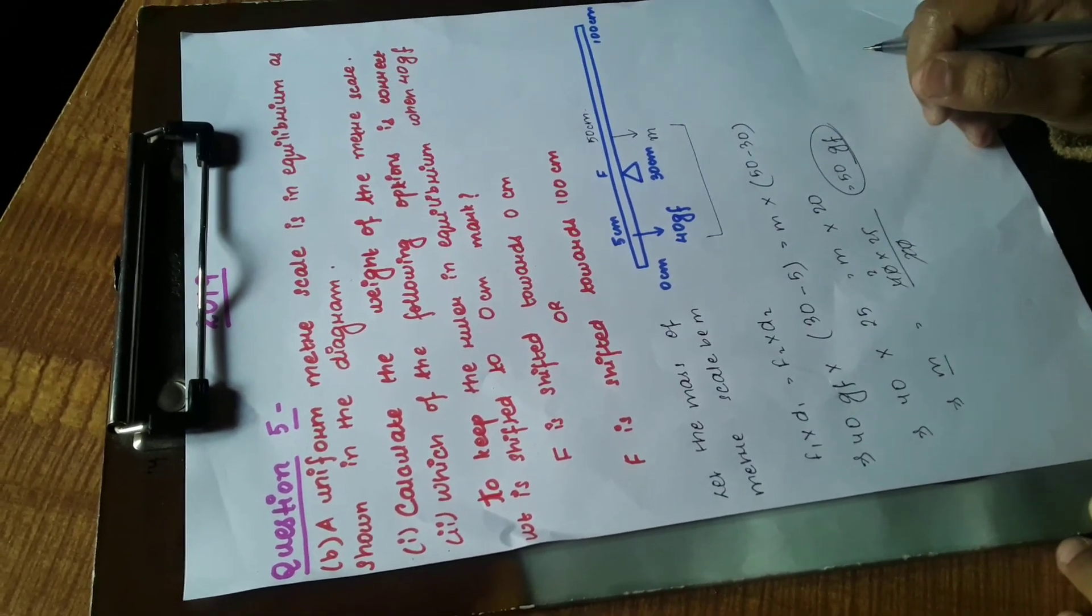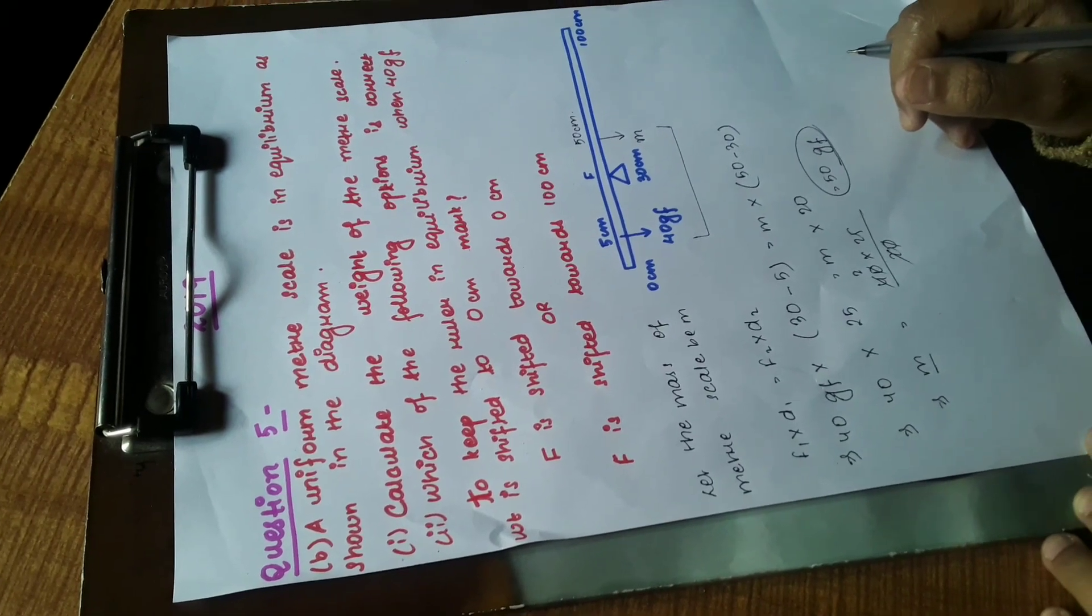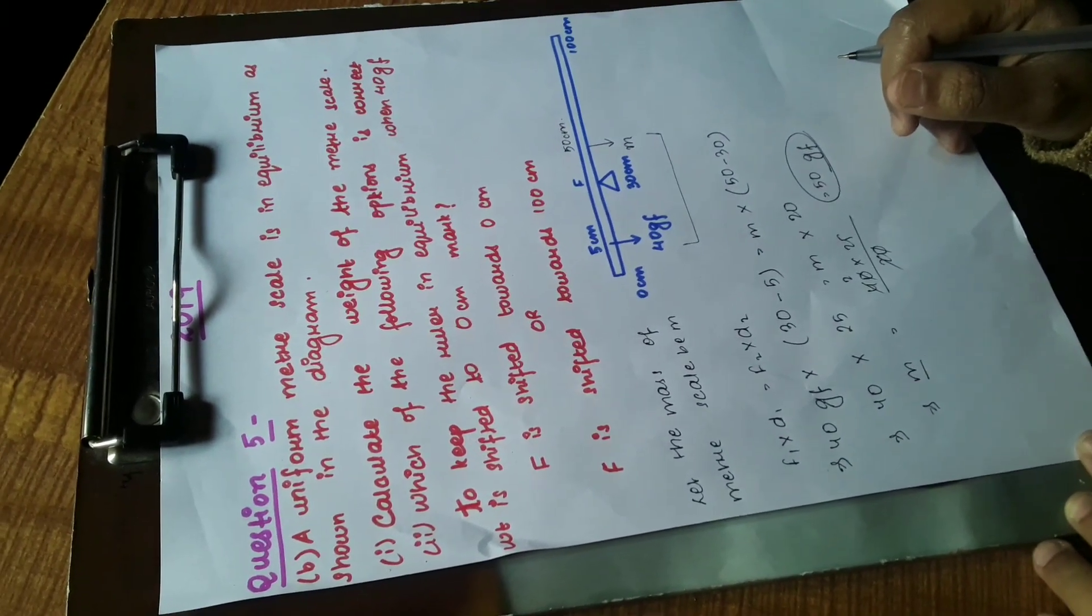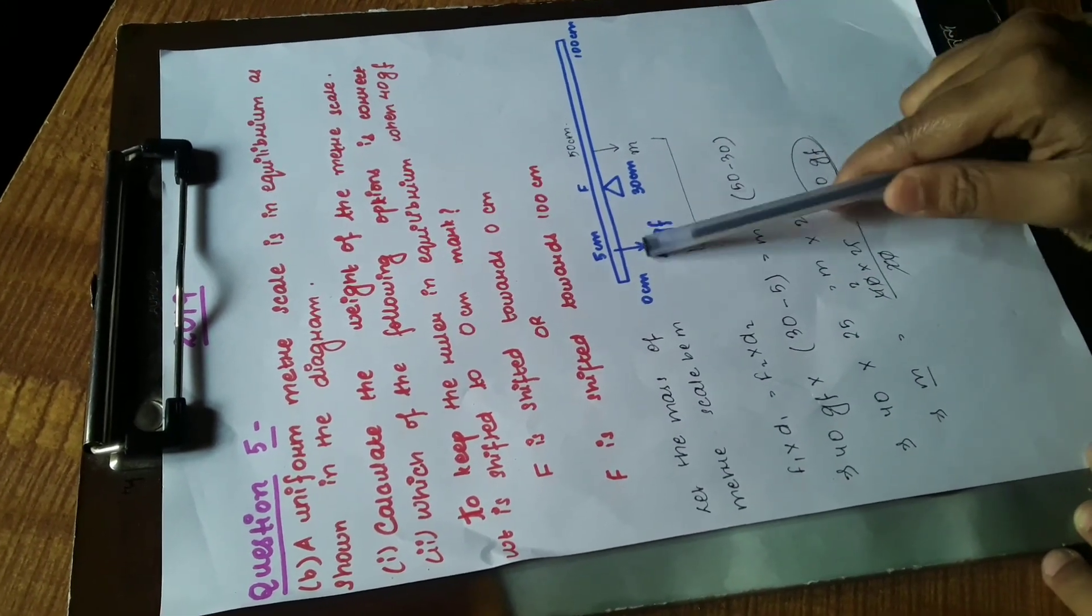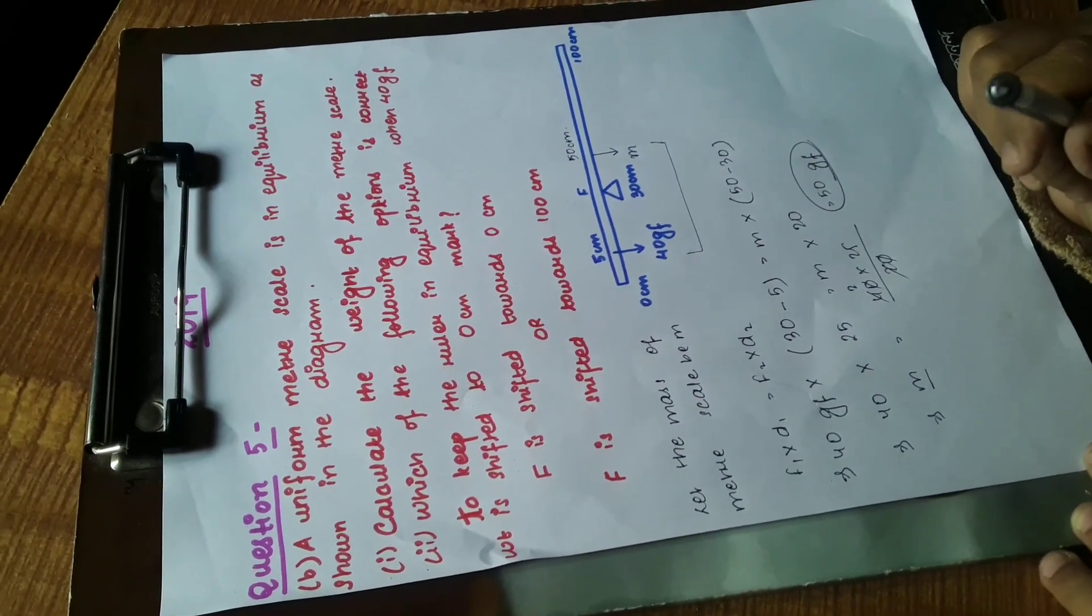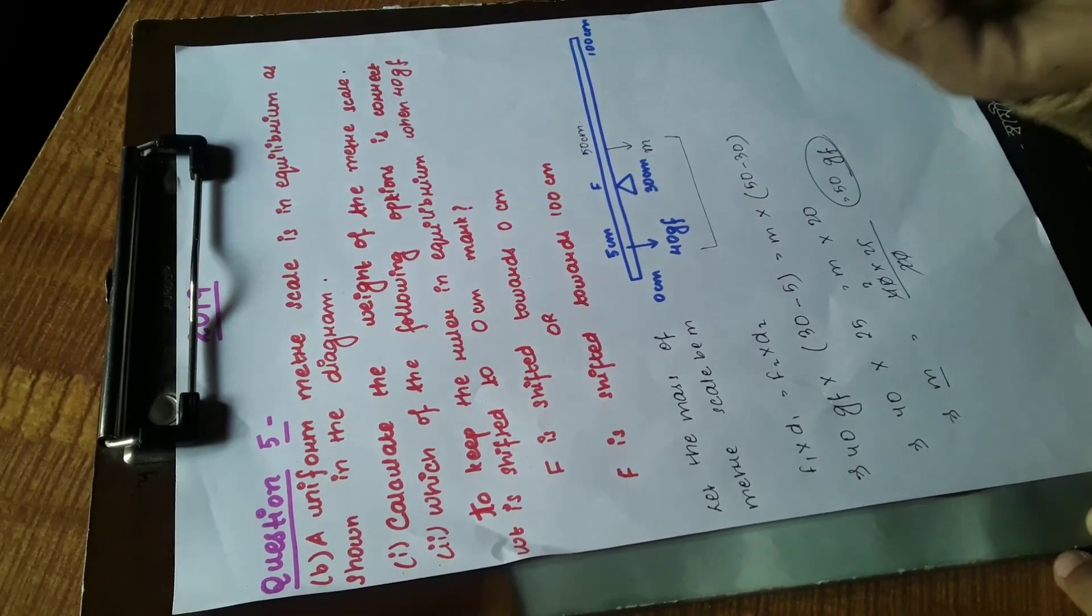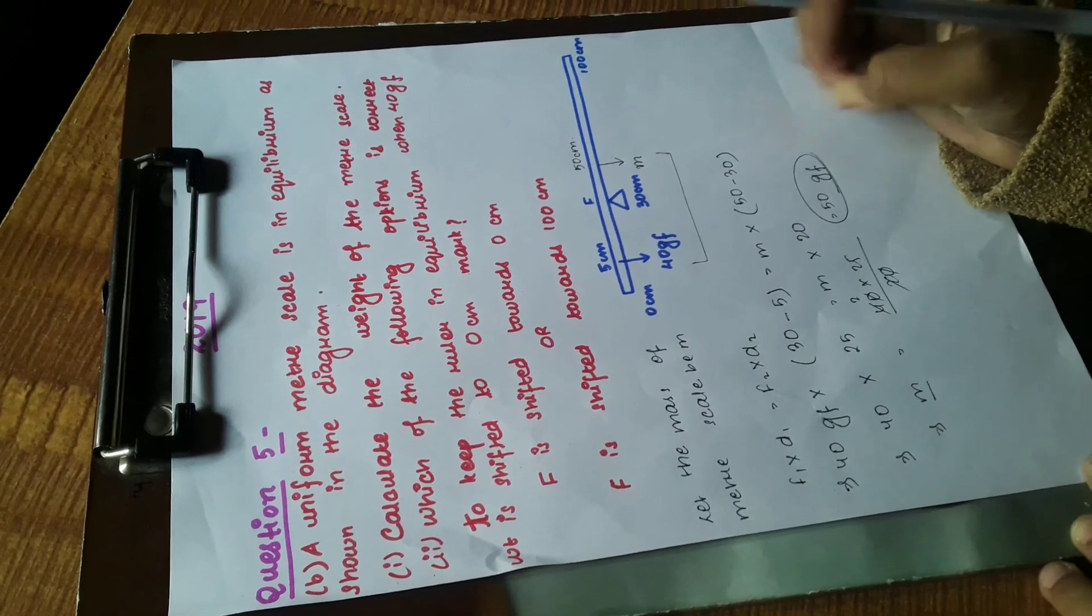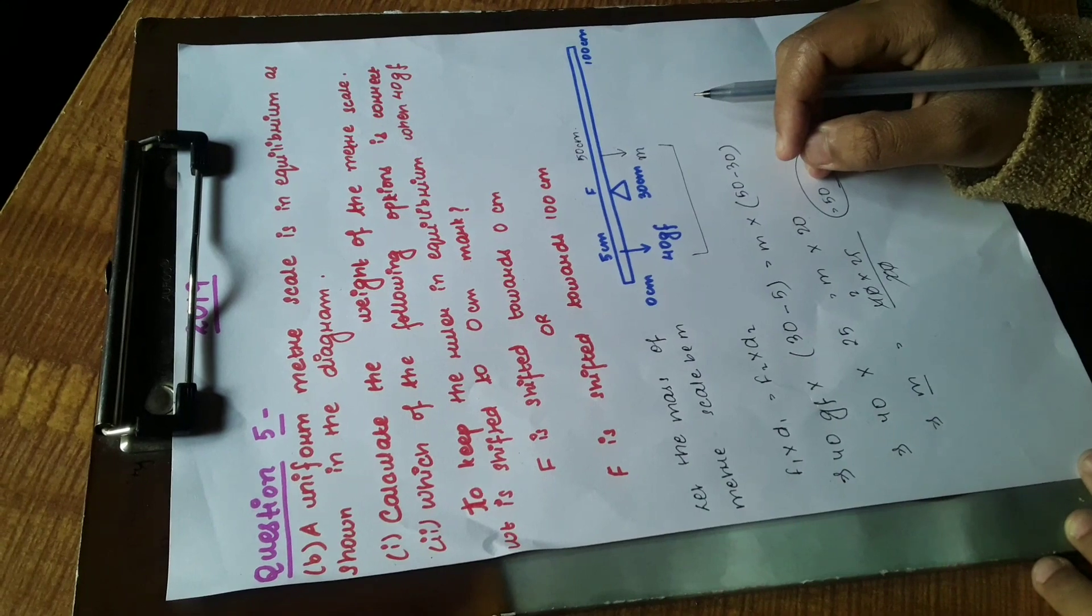Let's now move on to the next part. Which of the following options is correct to keep the ruler in equilibrium when the 40 GF weight is shifted to the 0 centimeter mark? Now we're considering that this 40 GF weight is being moved to the 0 centimeter mark. Naturally, the fulcrum—the support at the 30 centimeter mark—should be shifted towards the 100 centimeter mark so that the scale remains in equilibrium.